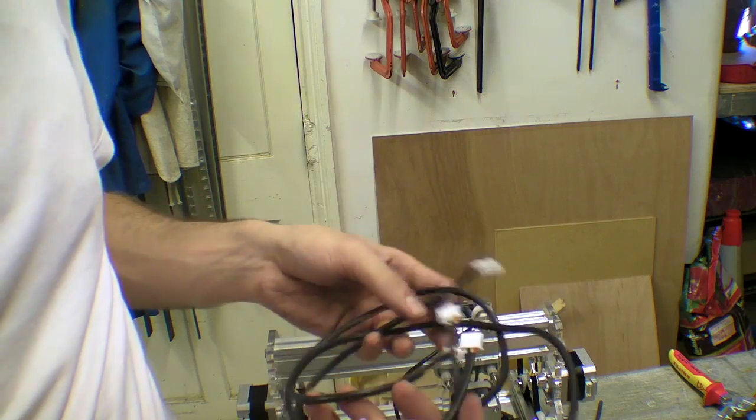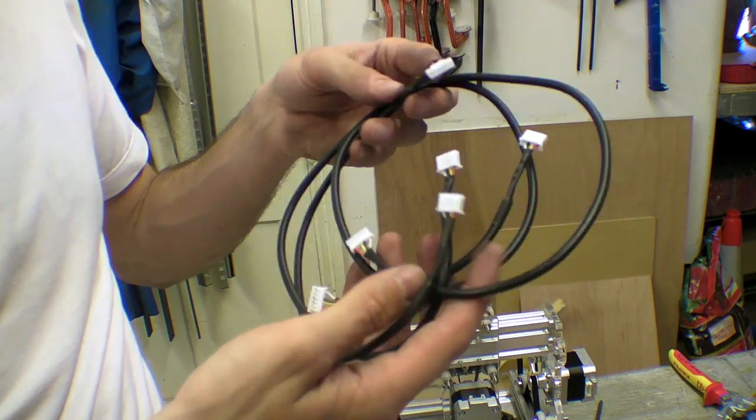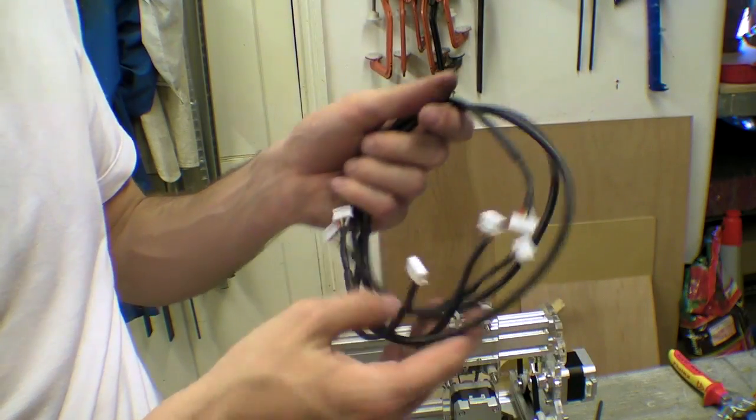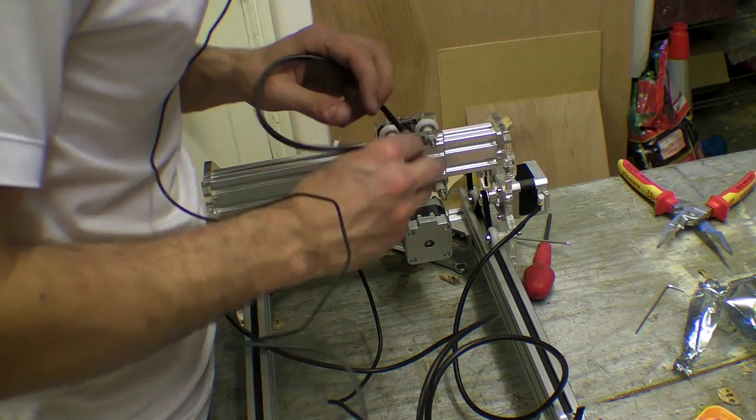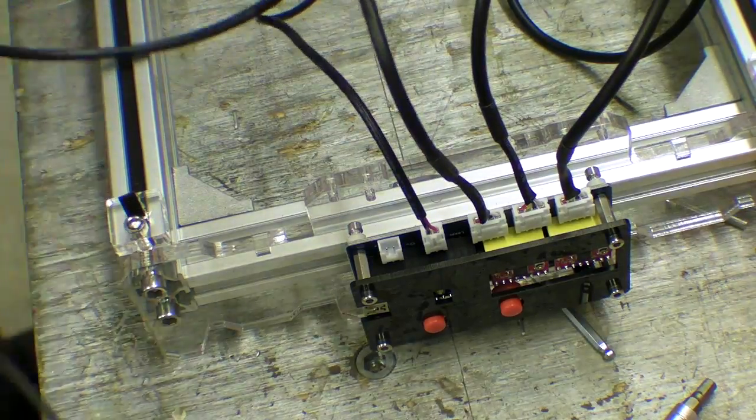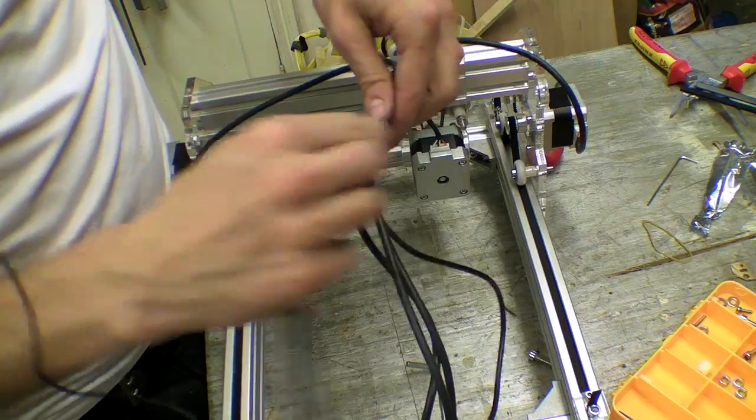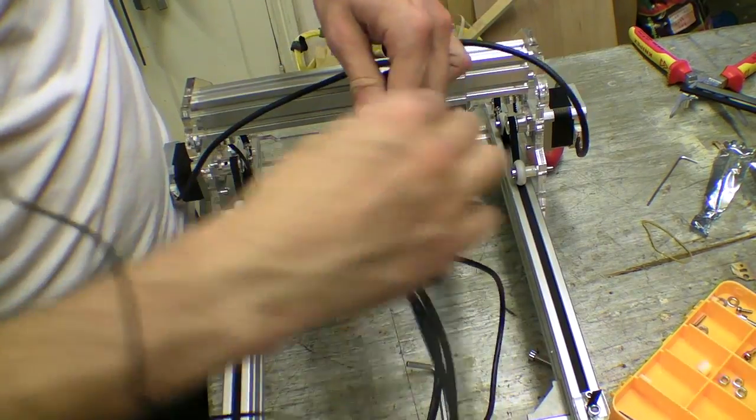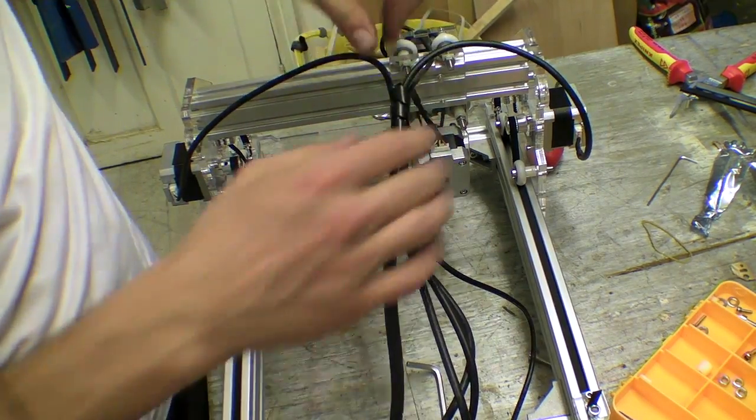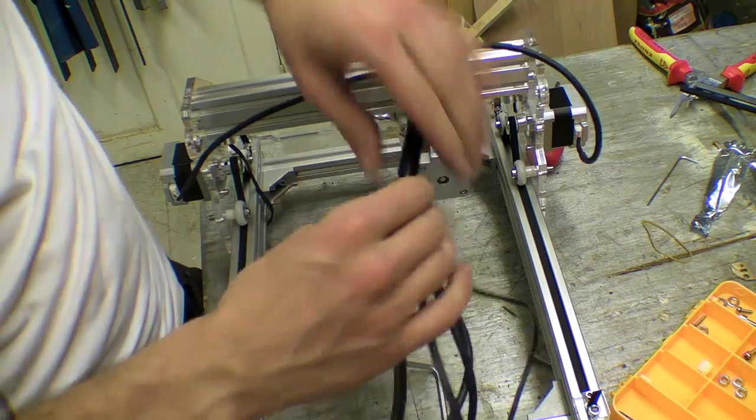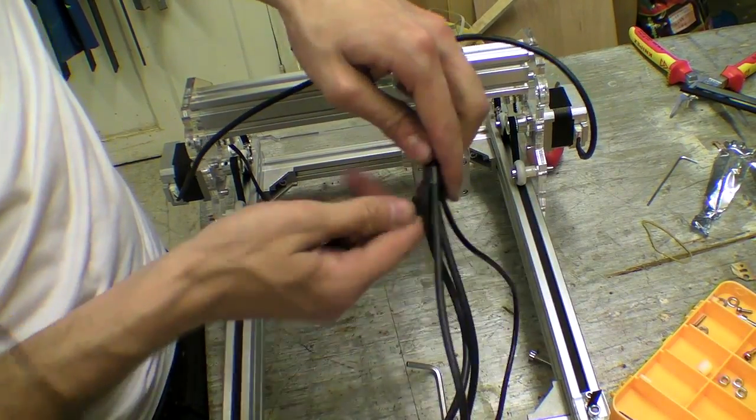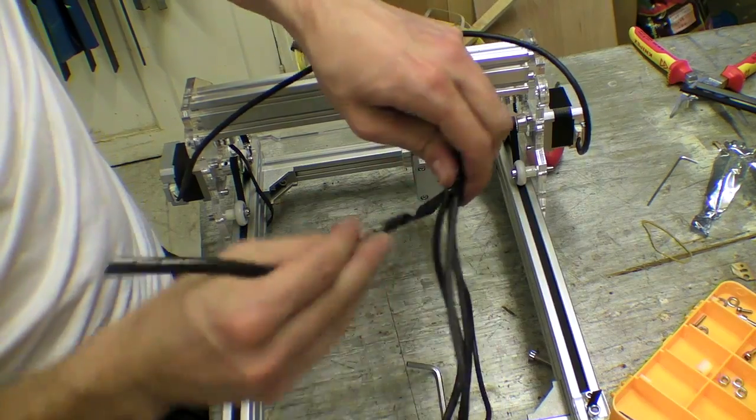The wires which connect the stepper motors to the driver board are already heat shrinked. You don't really have to do too much here. I'm just putting this wrapping around the wires just to protect them and stop them possibly getting lasered.